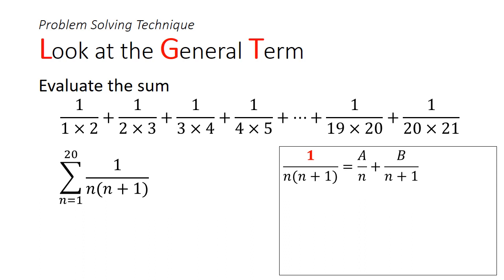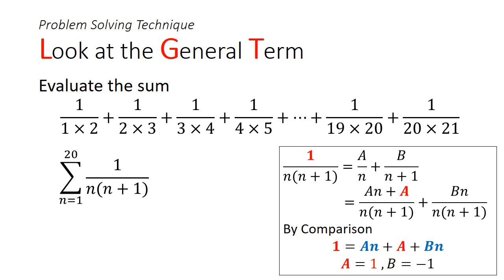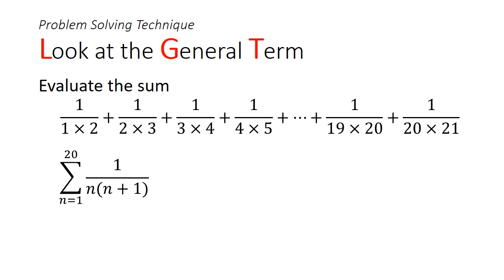We express the right-hand side as a single fraction with common denominator n(n+1) and compare the numerators: 1 equals a(n+1) + bn, which gives 1 = an + a + bn. Comparing constant terms: a = 1. Comparing coefficients of n: a + b = 0. Therefore a = 1 and b = −1.